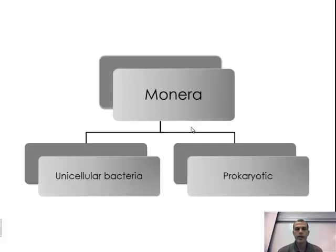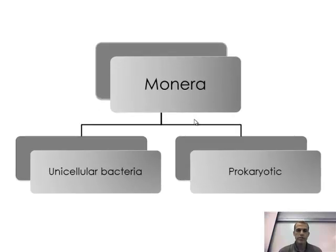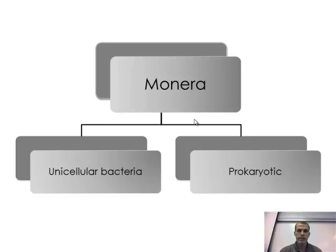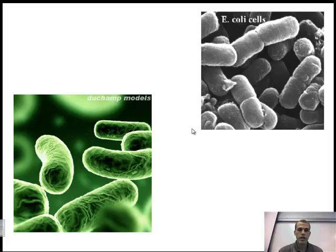The first kingdom is Monera — this is your bacteria. There are two different types: Archaebacteria and Eubacteria, and as mentioned, some books break these into their own separate kingdoms. The basic characteristics: they are unicellular bacteria and they're prokaryotic, meaning they do not have a defined nucleus. Unicellular means a single-celled organism. These organisms could also be mobile. They are very primitive — the first type of organisms found on Earth. Very simple: that one cell does everything for the organism.